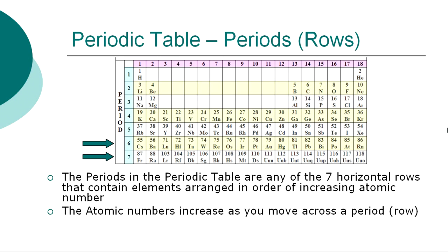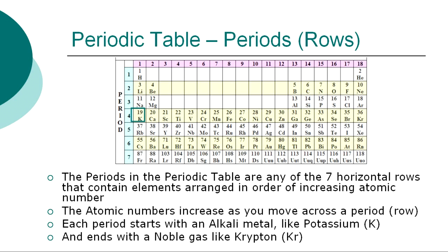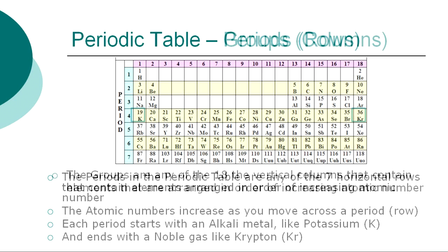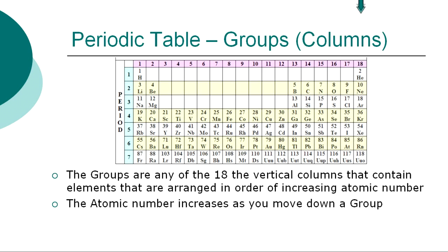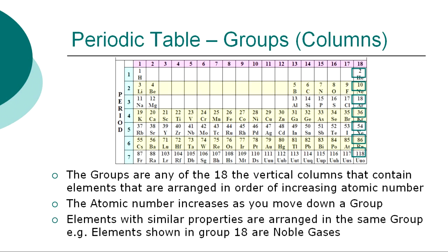The atomic numbers increase as you move across a period or row. Each period starts with an alkaline metal, like potassium, and ends with a noble gas, like krypton. The Periodic Table contains groups, which are any of the 18 vertical columns that contain elements arranged in order of increasing atomic number. The atomic number increases as you move down a group or column. Elements with similar properties are arranged in the same group — for example, elements shown in group 18 are noble gases.